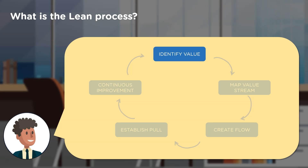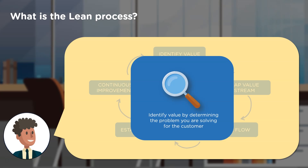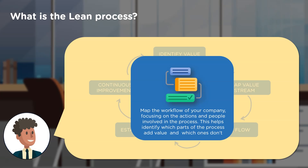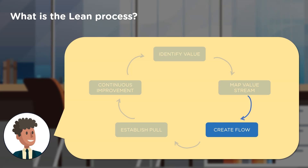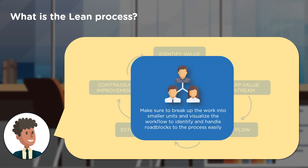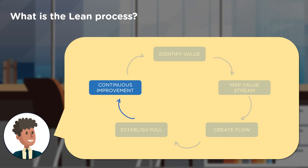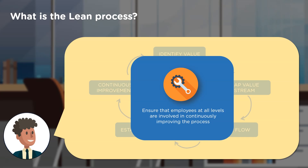Now let's talk about the Lean process — there are five different steps. First is Identifying Value: determine what problem you're trying to solve for the customer. Second is Map Your Value Stream: map the workflow of your company, focusing on the different actions and people involved, identifying which parts add value and which don't. Third is Create a Flow: break up your work into smaller silos and visualize the workflow to easily identify problems. Fourth is Establish Pull: set up a system where products are created only when there is demand, optimizing resource capacity. Fifth is Continuous Improvement: ensure all employees at all levels are involved in the continuous improvement of the process.